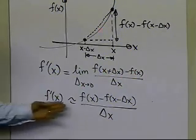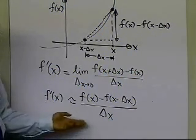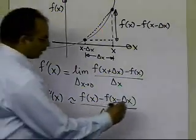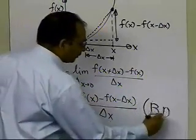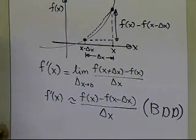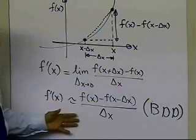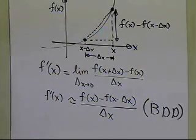This is an approximate definition of f prime of x, because delta x is a finite number as opposed to approaching zero, and this is the formula for the backward divided difference scheme. It is very similar to the forward divided difference scheme where you choose a point delta x ahead; now you are choosing a point delta x to the left of x.